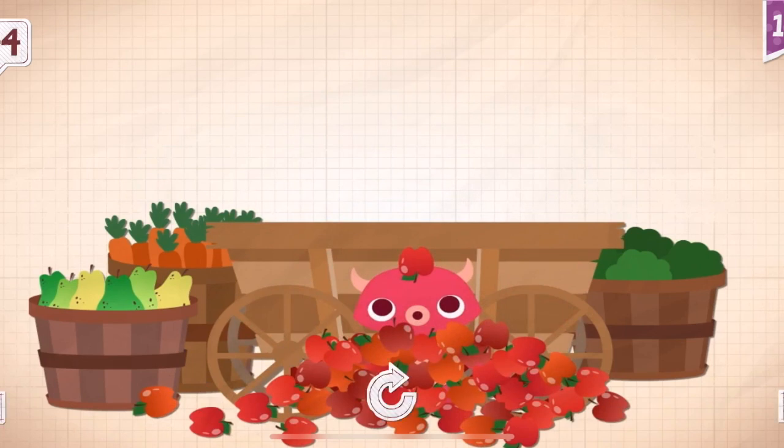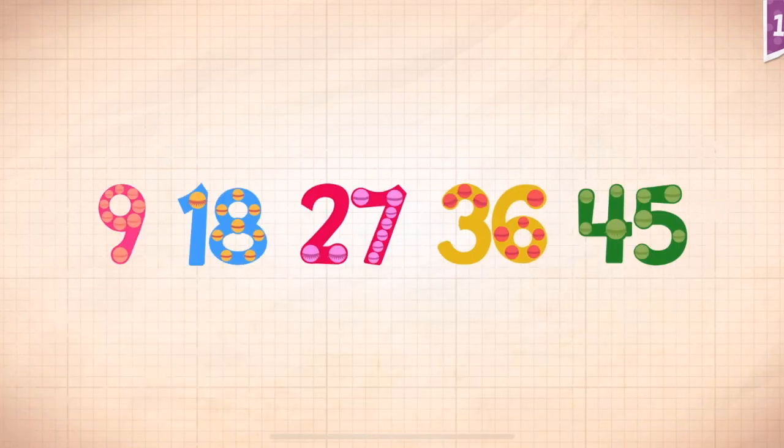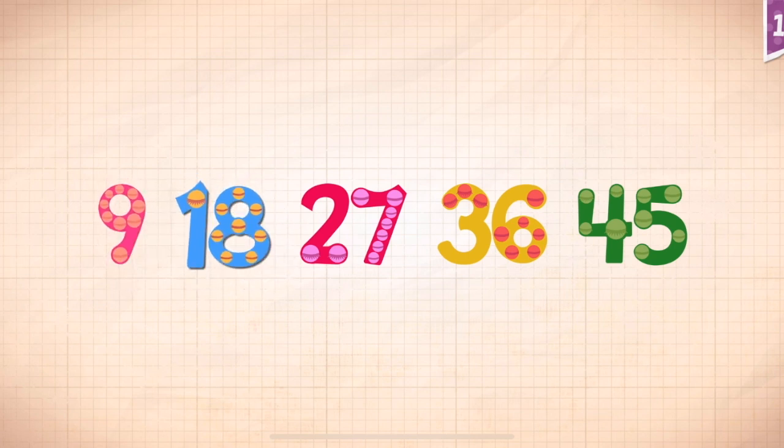Pinkerton grabbed an apple and got 44 instead. Count by nines: 9, 18, 27, 36, 45.